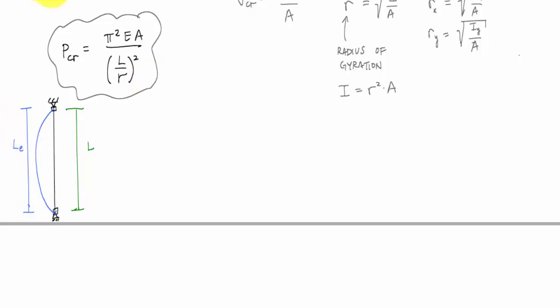And the relationship between this effective or buckled length with the original length of the column was that this LE, having pin-pin supports, was equal to one times L. This one is a factor which we call the symbol K.